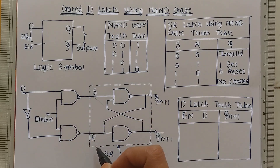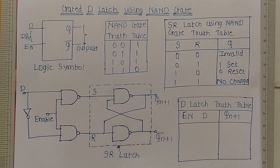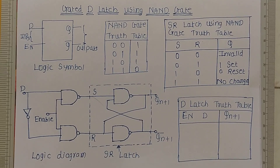This is the logic diagram of the gated D latch. The gated D latch can be constructed from the D latch by adding an enable input and two more gates to the D latch.